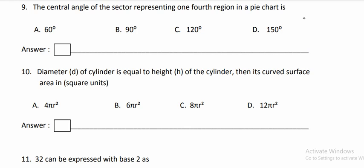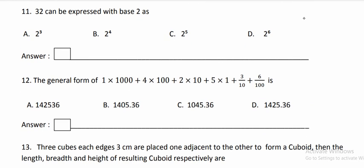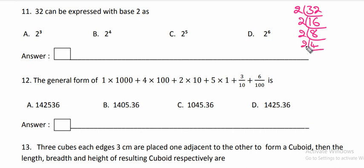32 can be expressed with base 2 as — for expressing in base 2, we divide 32 by 2 repeatedly: 32, 16, 8, 4, 2, 1. That means 2 comes 5 times. So 32 is equal to 2 to the power of 5.